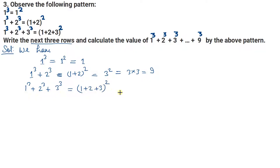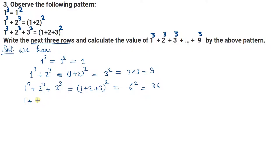Verification: 1 plus 2 plus 3 होगा 6, और 6 का square होता है 36. अब cube side देखें: 1 का cube 1, 2 का cube 8, 3 का cube 27. 1 plus 8 plus 27 होता है 36 — बिल्कुल exactly equal आ रहा है। तो यह pattern सही है।